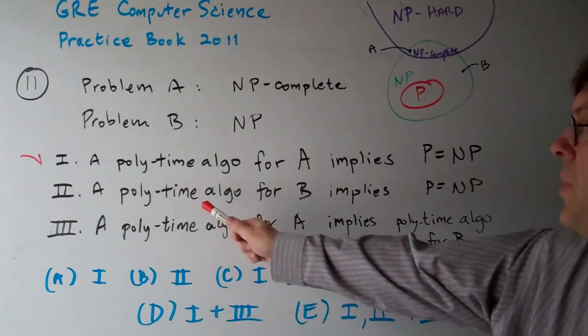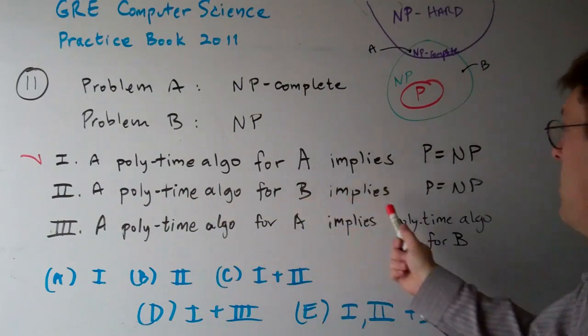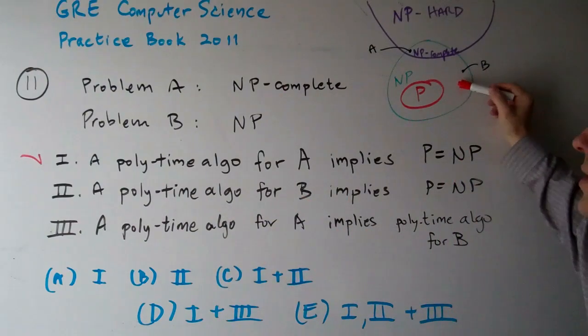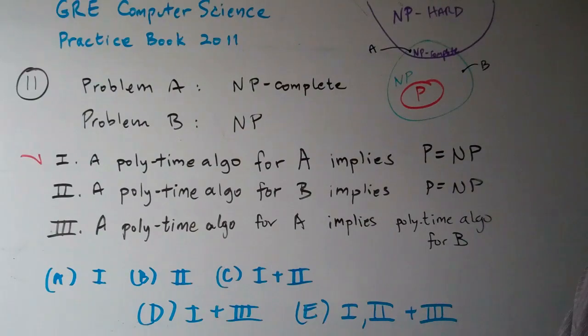Now, number two says a polynomial time algorithm for B implies P is NP. Well, no, it doesn't really because there's still these problems that are NP-complete. So, no, this one's not true.